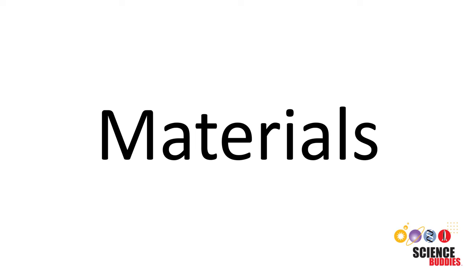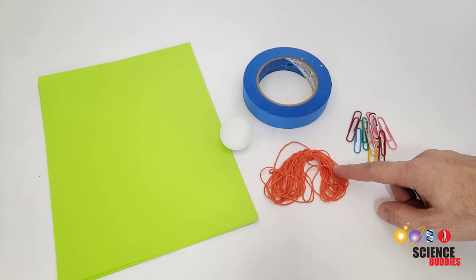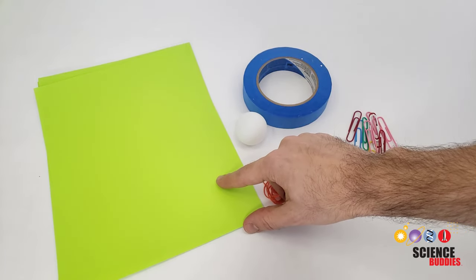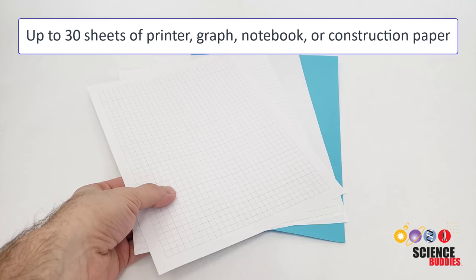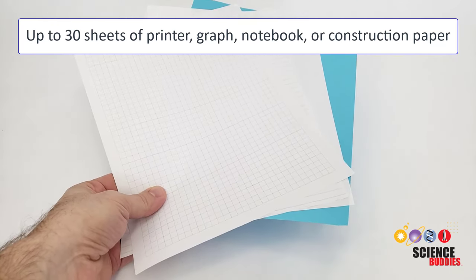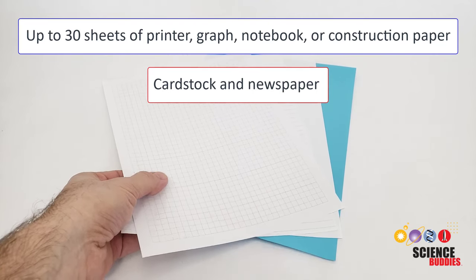Only certain materials are allowed if you want to enter the contest for a chance to win a cash prize for your school or non-profit organization. You can use up to 30 sheets of printer, graph, notebook, or construction paper. Cardstock and newspaper are not allowed.